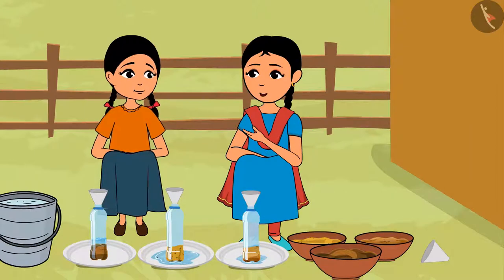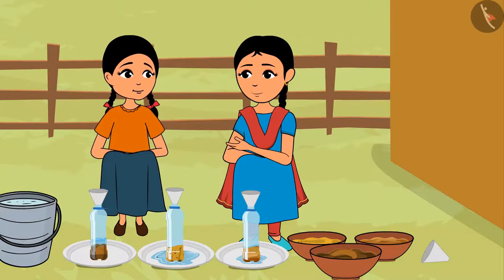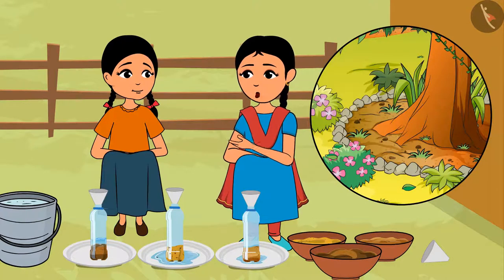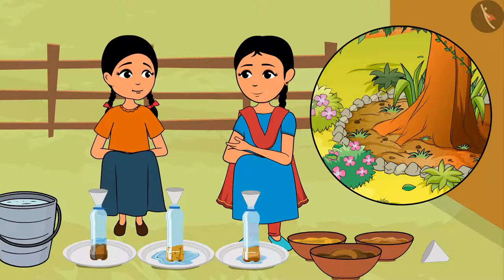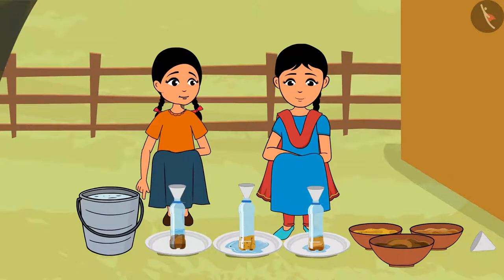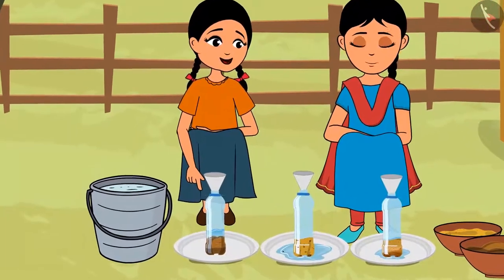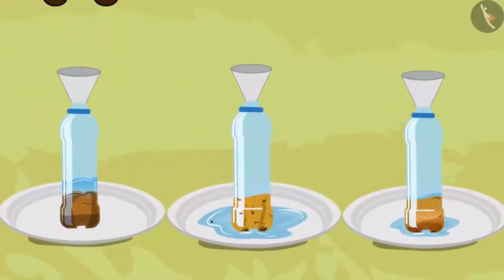Neeloo agrees: 'I observed that the soil from the garden had an almost equal quantity of big and small particles.' Minu adds: 'Look Neeloo — the soil from Shankar Kaka's field let very little water pass through, and the garden soil allowed some water to pass while some is still on top.'